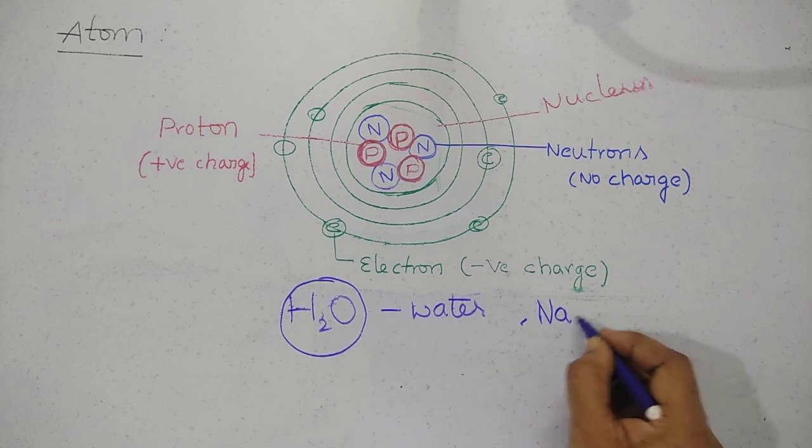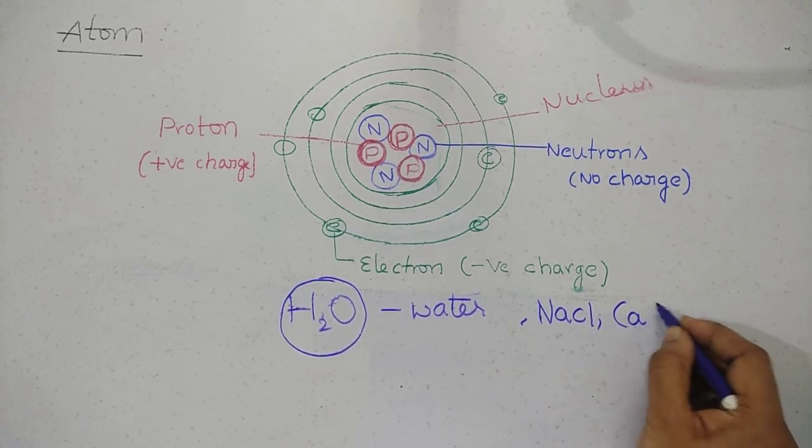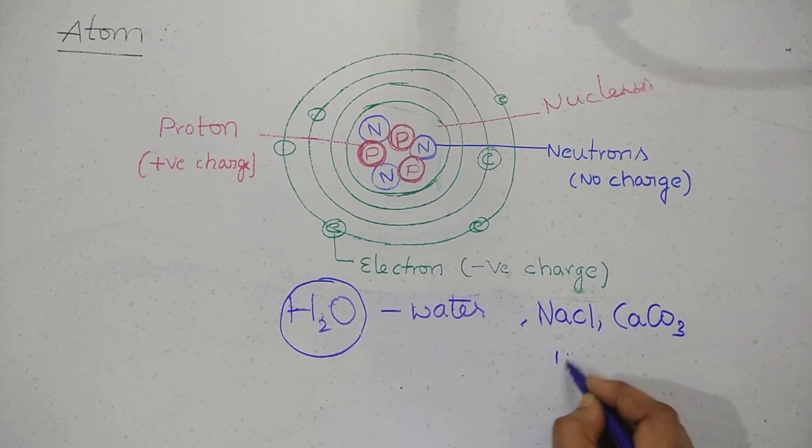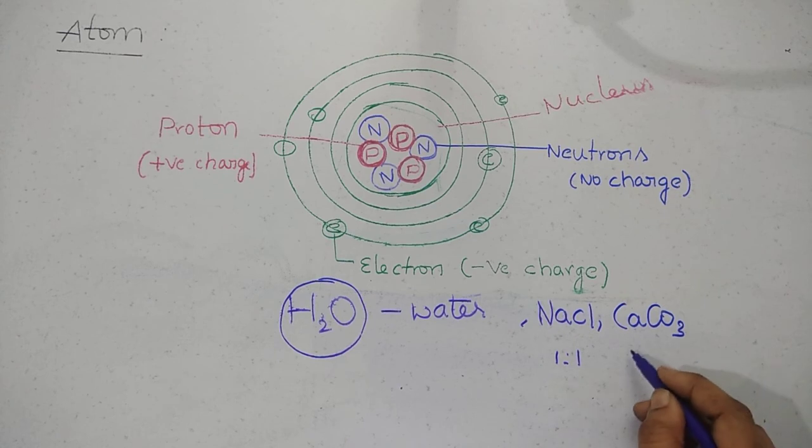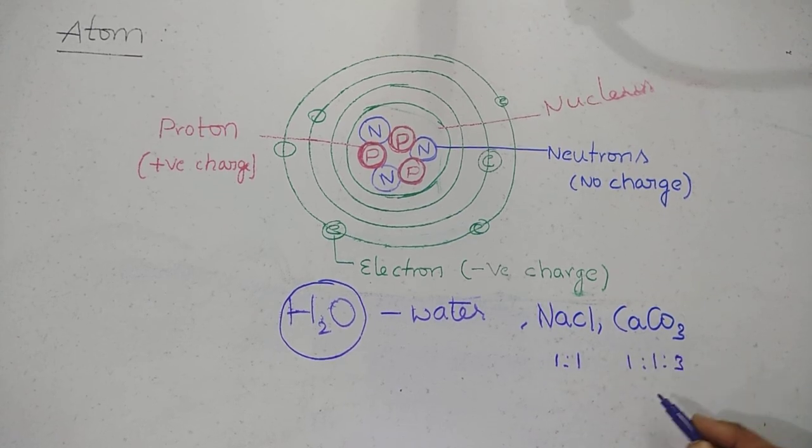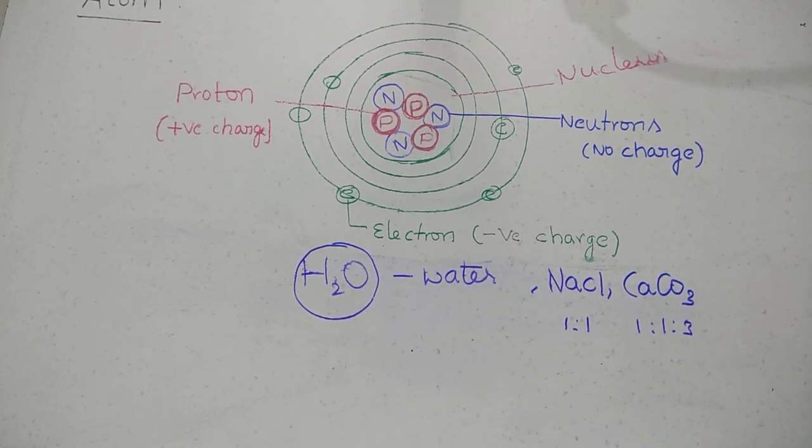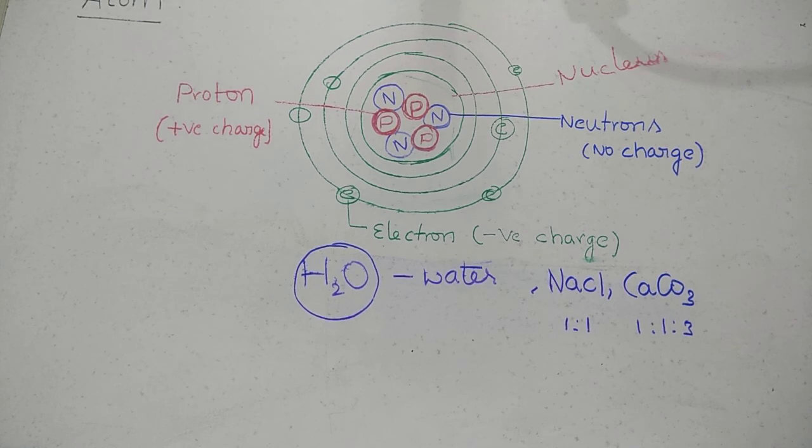This is two hydrogen atoms combined with one oxygen atom. This is a combination of atoms, so this is compound. Another example is NaCl, CaCO3. So this is sodium chloride, calcium carbonate. Sodium chloride is one ratio, fixed proportions. Calcium carbonate: one calcium, one carbon, three oxygen. Different elements in fixed proportions combined is compound.